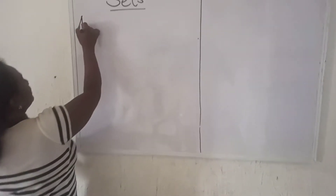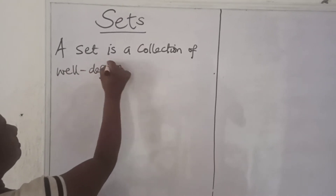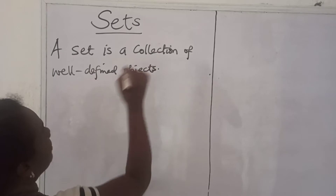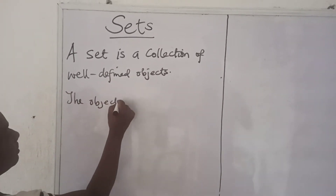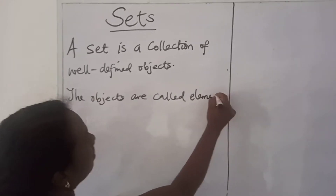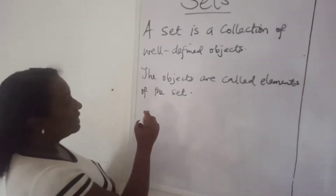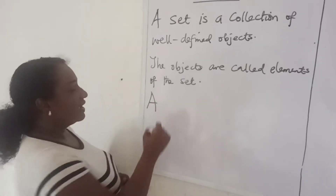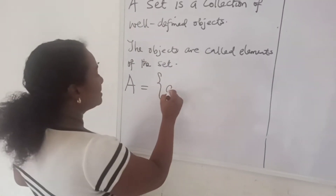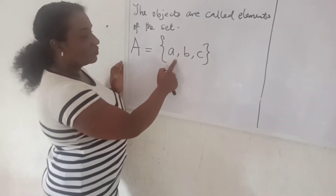A set is a collection of well-defined objects, and the objects are called elements of the set. A set is usually written with a capital letter, and the elements of the set are written with small letters. The elements of the set are separated with commas.